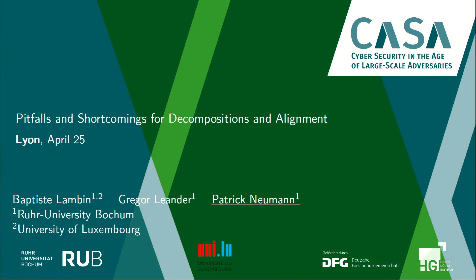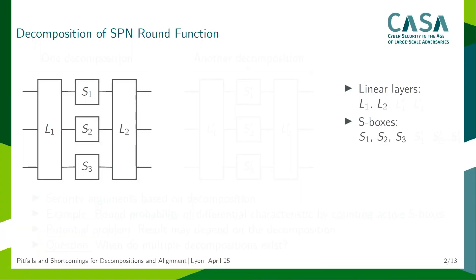Let me directly start by explaining what I mean by decomposition. Here I mean that we decompose a function into a linear layer L1, a parallel application of multiple S-boxes S_i, and another linear layer L2. We are quite used to this description of a round function of a cipher — many ciphers are actually described in this way. And we may base security arguments on such a decomposition — for example, counting the number of active S-boxes to bound the probability of a differential characteristic.